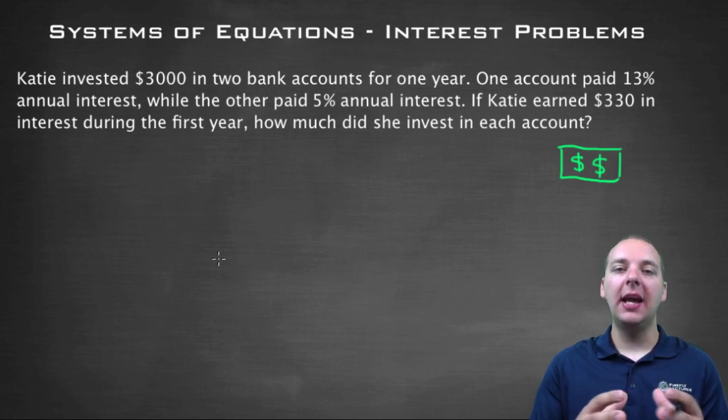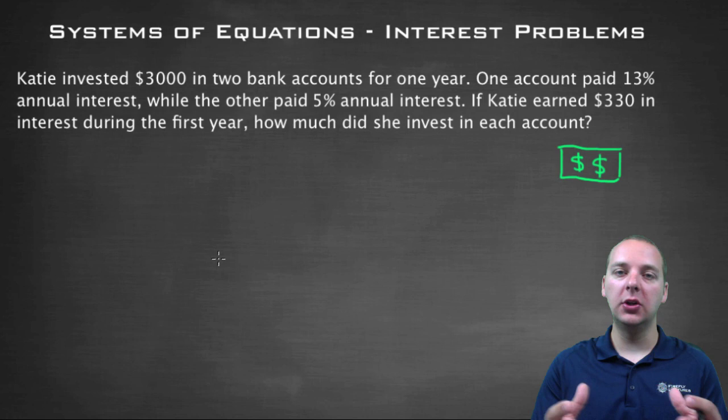It says, if Katie earns $330 interest during the first year from both of the accounts together, how much did she invest in each of the accounts separately? It's a good question.